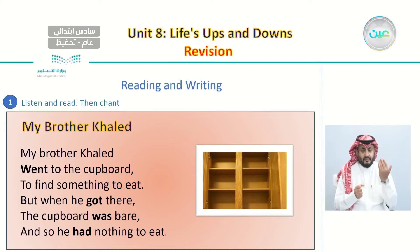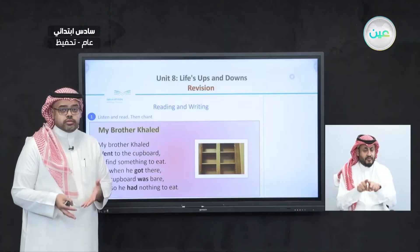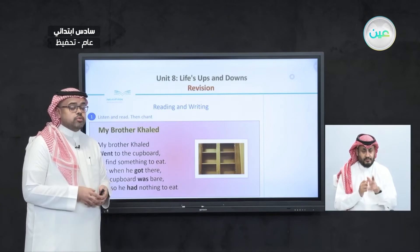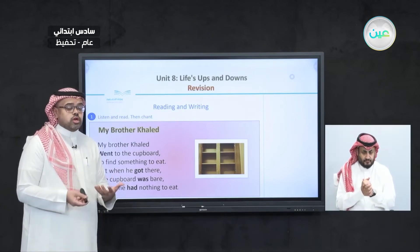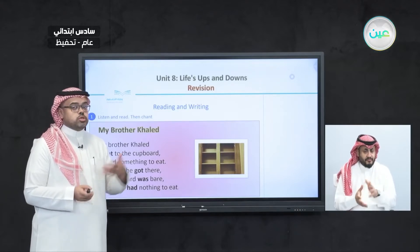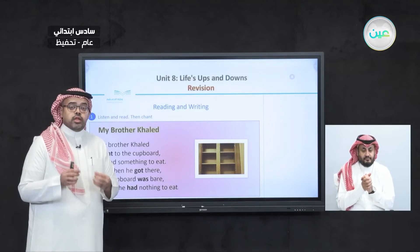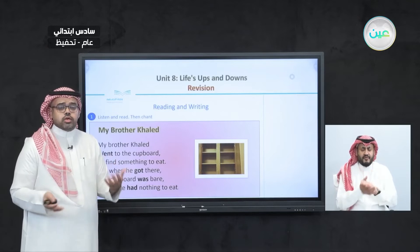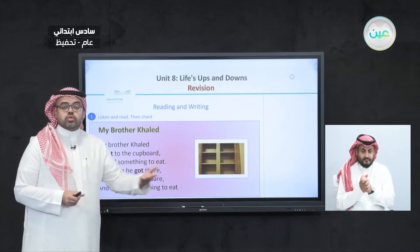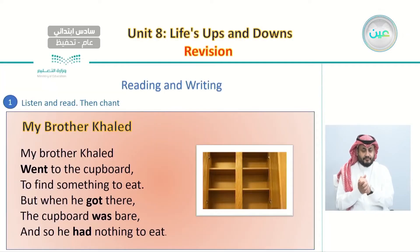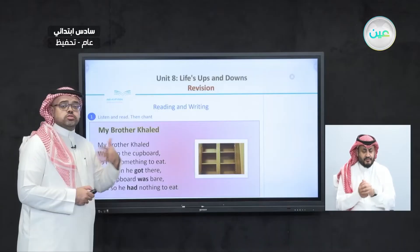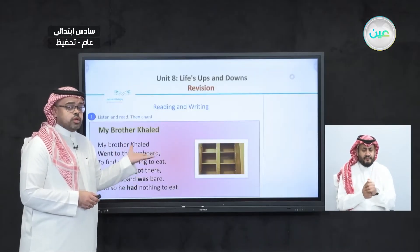Quick revision from our last lesson. In our last lesson, we had reading and writing, where we read a text called My Brother Khalid. In this text, we learned what happened to Khalid in the past, and we also tried to rewrite the story by changing the verb forms — instead of writing verbs in the past, we wrote them in the present. Let's make a quick reading of this text and review the rest of our last lesson.